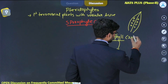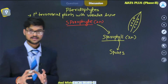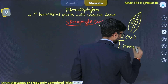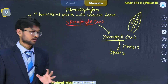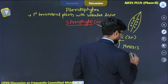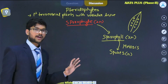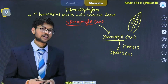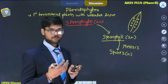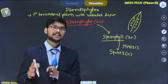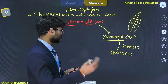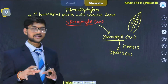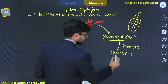The ploidy of the sporophyte is diploid. Spore mother cells divide into spores by meiosis — a process called sporic meiosis — so the spores' ploidy is haploid. Most pterophytes are homosporous, meaning spores are of the same morphology, though some examples of heterosporous pterophytes are Selaginella and Salvinia.